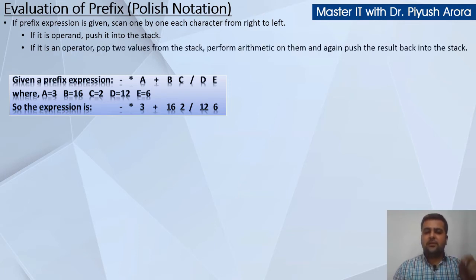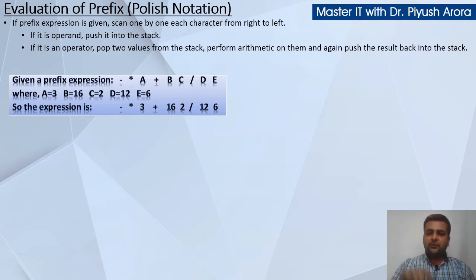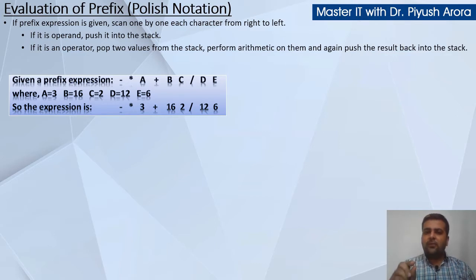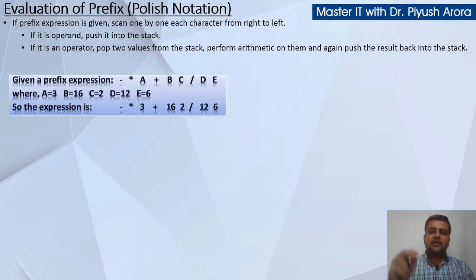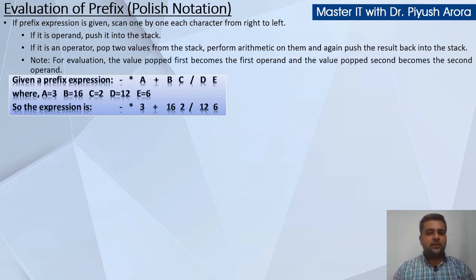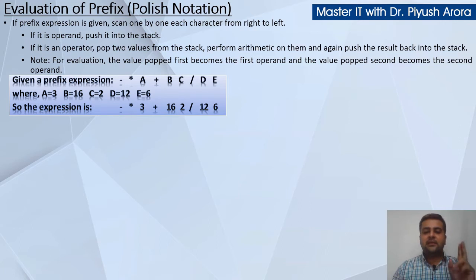Next, if it is an operator — yadi aapko scan karte karte expression ke andar operator dekhne ko milta hai — you have to pop the two values from the stack, unko stack mein se pop kijiye, perform arithmetic on them yani ki jo bhi operator aaya hoga, woh operator ka arithmetic operation aap un dho operands ke oopar kar dijiye, and again push the result back into the stack. But please note, it is a very important point to note.